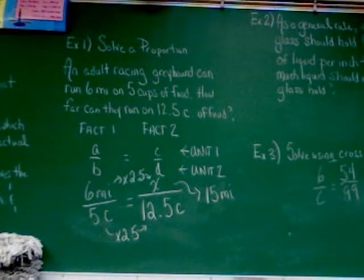The adult racing greyhound can run 15 miles on 12 and a half cups of food.